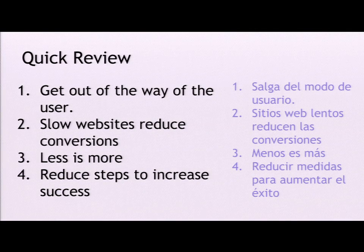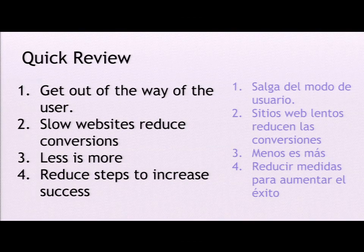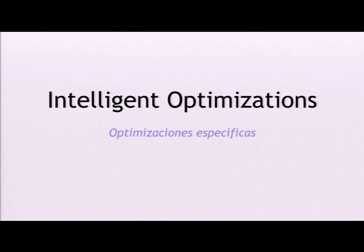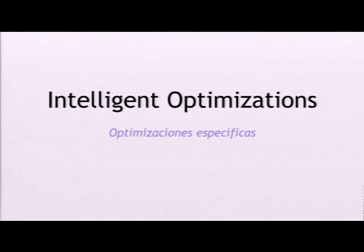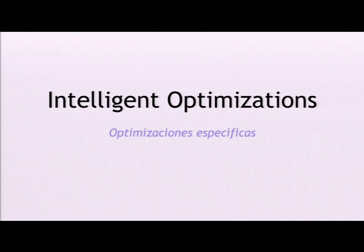Quick review — these are the practical steps: get out of the way of the user; remember that slow websites reduce conversions; less is more; and reduce steps to increase success. Let's assume now that you have the fastest, least cluttered website with optimized checkout and registration steps. But we can do better than that. If you have a number of optimizations already done and you're still trying to get that extra 10% of traffic to increase buyers, there's some really fancy stuff we can do.